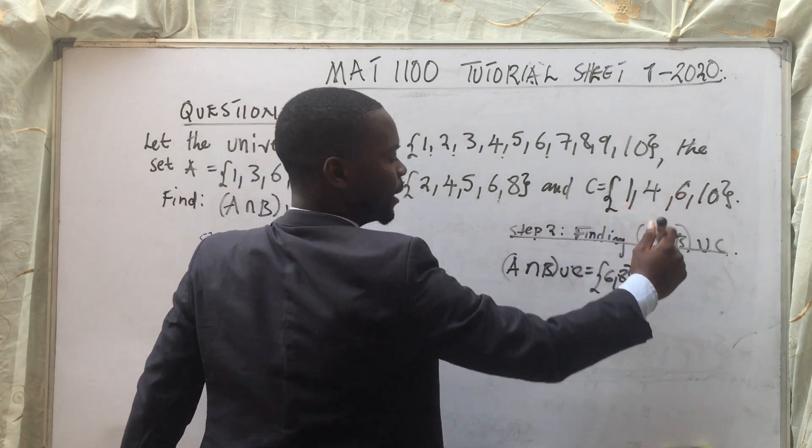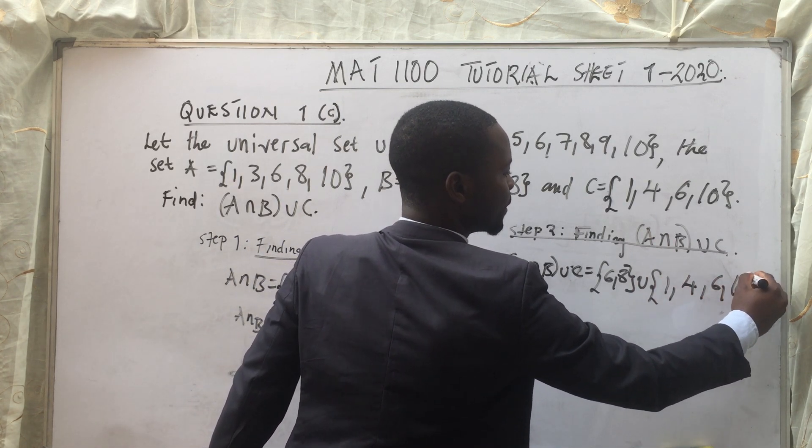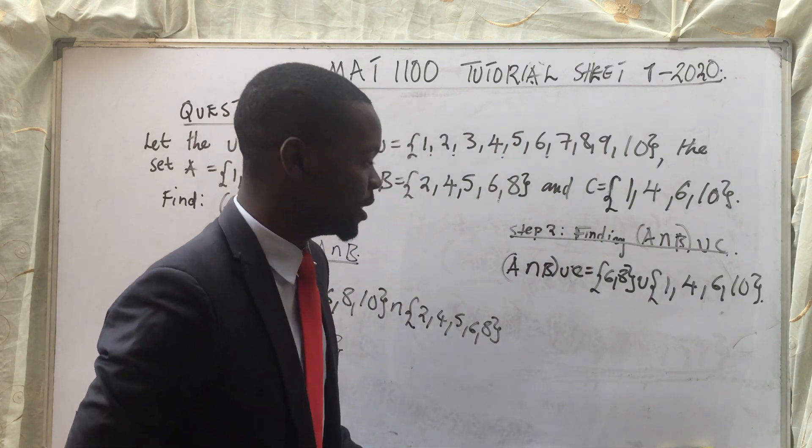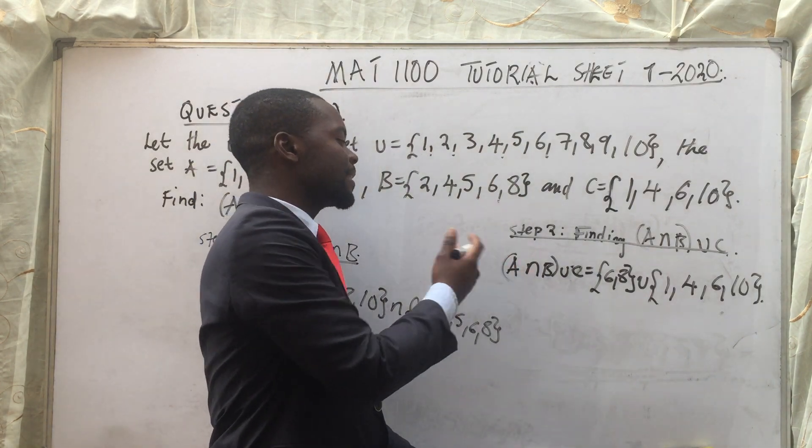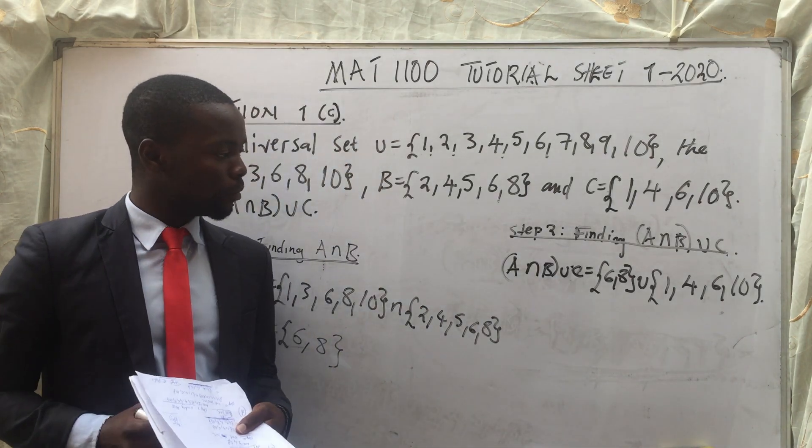This is our set C here. It's 1, 4, 6, and 10. So union simply means we combine, we bring together all the elements which are in set A intersection B, and all the elements which are in set C, we bring them together. Very simple.